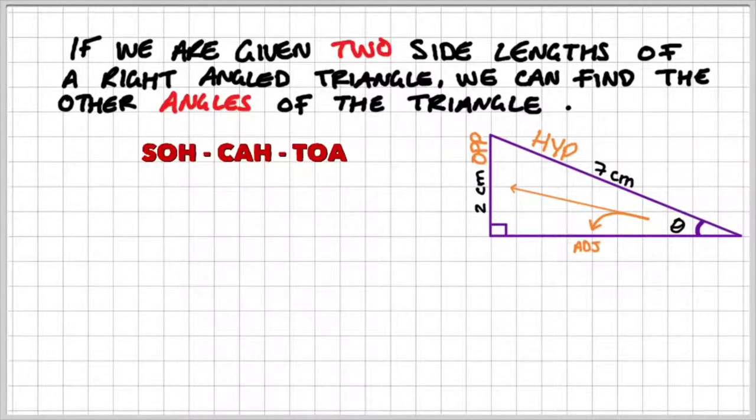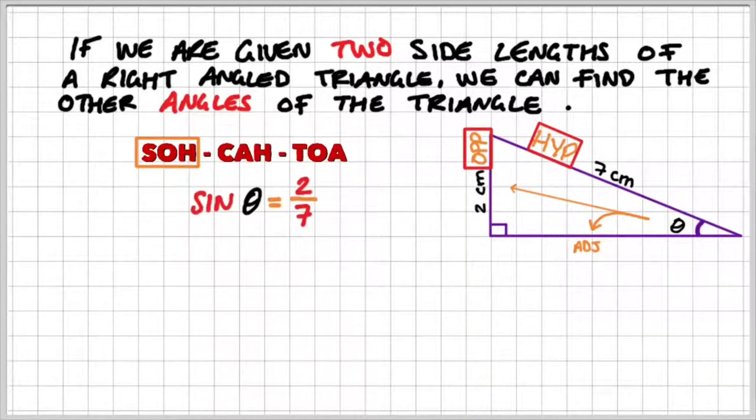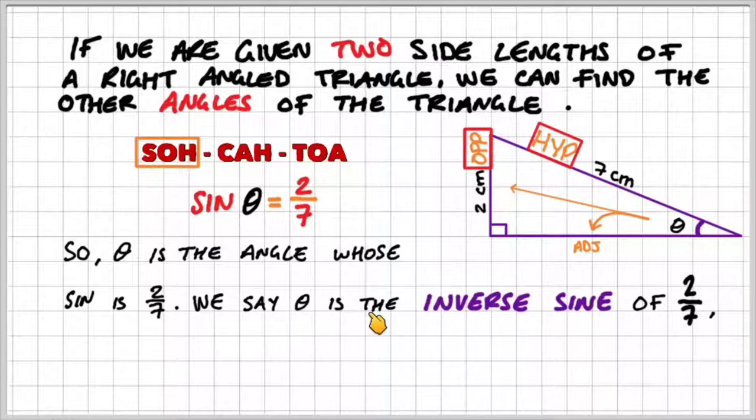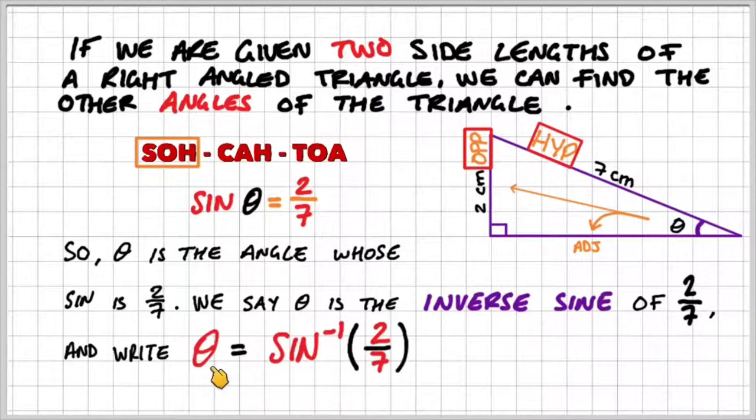So using SOH-CAH-TOA, we know that we have the opposite and the hypotenuse, in which case we're going to use a sine ratio. So we can say then, sine theta is equal to 2 over 7, so theta is the angle whose sine is 2 over 7. We say theta is the inverse sine of 2 over 7, and we write it as theta is equal to sine inverse 2 over 7.